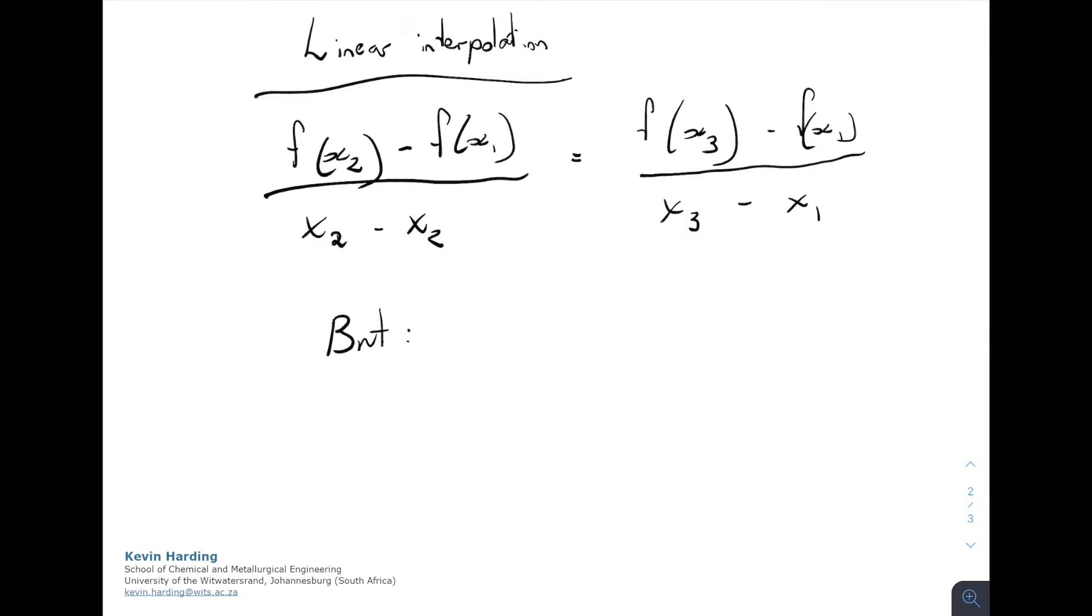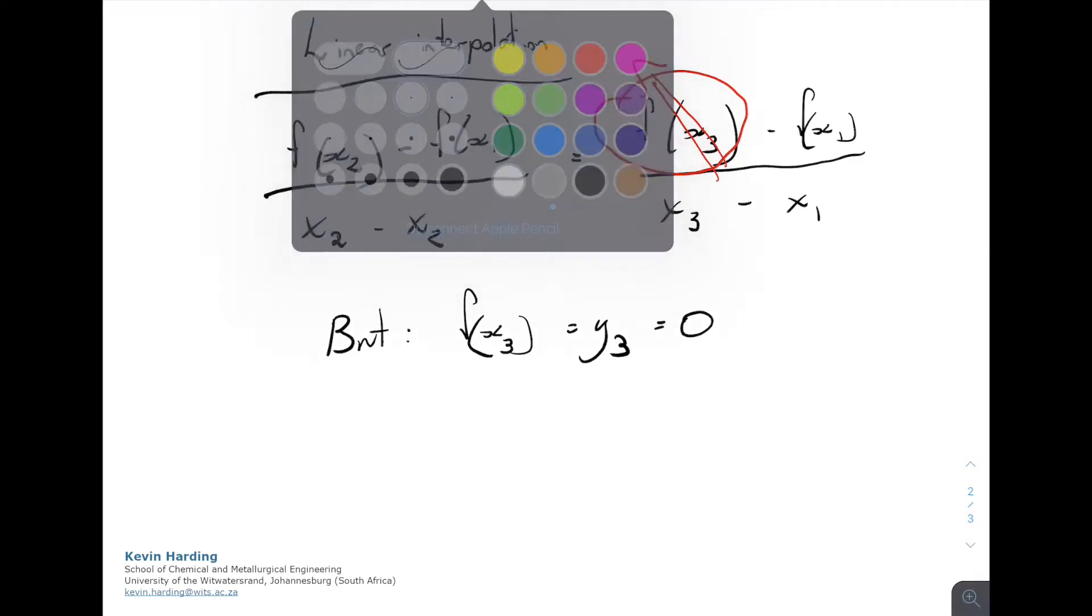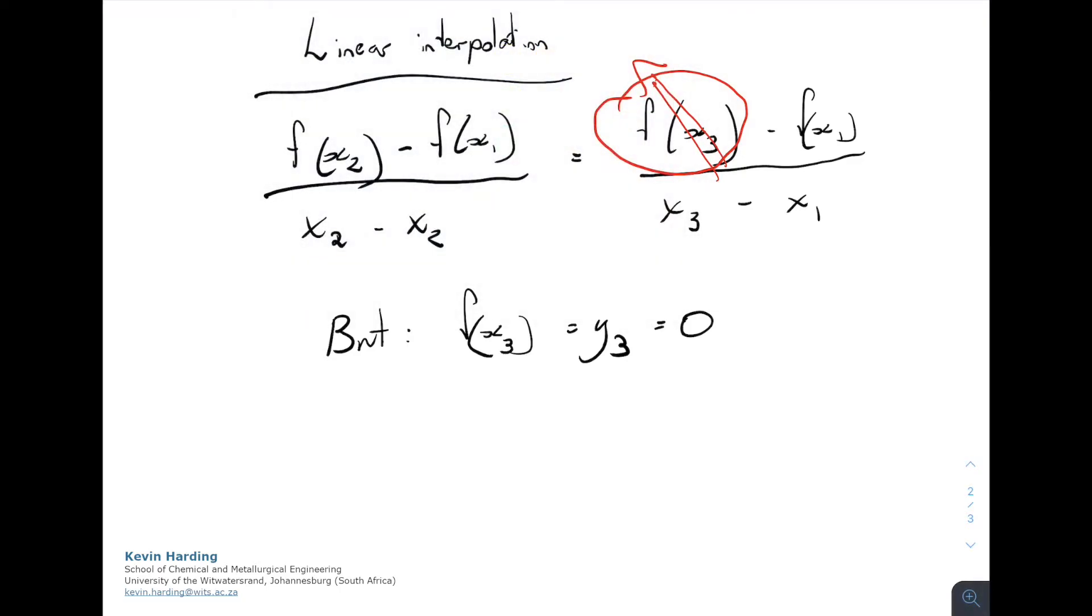But what we want to find is where the f of x3 cuts the x-intercept. So that means where y3, so that is what f of x3 is, is equal to zero. So if we have y3 equal to zero, that means that in our graph, the f of x3, that is this value here is going to fall away, because we are now assuming or we want to calculate where that is zero. If we now rearrange and simplify, we can write that therefore the x3 value minus the x1 value is equal to the following.